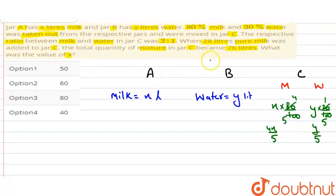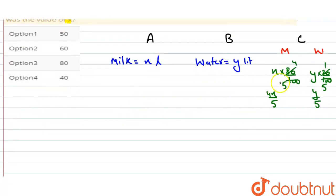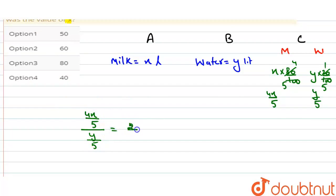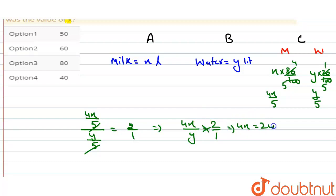Milk اور water کا جو ratio given ہے وہ 2:1 ہے. تو milk upon water کی بات کریں jar C میں: 4x/5 divide by y/5 کر دیں گے. 5 سے 5 cancel out ہو جائے گا، تو 4x divide by y is equal to 2 upon 1. Cross multiplication کر دیں گے تو 4x = 2y. یہاں سے y کی value: 4x divided by 2 = y، تو y is equal to 2x. یہ ایک equation ہے۔